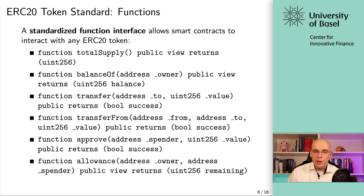A standardized function interface allows smart contracts to interact with any ERC-20 token. Imagine a world where everyone implemented their own token contract with no standards — a decentralized exchange would have to implement every single token separately. With a standard, you just have this interface with the same functions, implement it once in a generic way, and then the decentralized exchange can interact with any one of these token types.